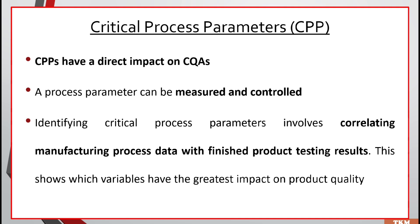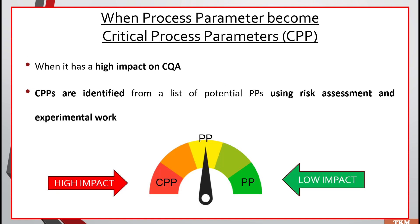A process parameter can be changed, there can be variations in it, it can be measured and controlled. How can we identify a critical process parameter? By correlating manufacturing process data with finished product testing results. This shows which variables have the greatest impact on product quality. A potential process parameter becomes a critical process parameter when it has high impact on a critical quality attribute. Critical process parameters are identified from a list of potential process parameters using risk assessment and experimental work.